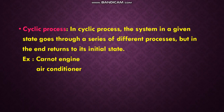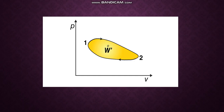Next is the cyclic process. In a cyclic process, the system goes through a series of different processes, but in the end it returns to its initial state. The system can undergo different processes, but finally it must return to the starting point. Examples are the Carnot engine and an air conditioner. This can be represented on a pressure versus volume diagram. Many thermodynamic processes are cyclic processes.